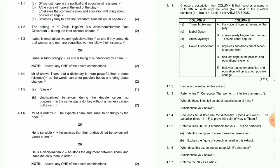Isabel is emphatic and decisive as she firmly maintains that women and men are equal. Question 4.1.4: How does Mr. M later use the dictionary — 'Opens and reads on the table,' lines 14 and 15 — to prove his point of view to Thami? Mr. M shows Thami that the dictionary is more powerful than a stone or violence, as words can enter people's heads and bring about change.